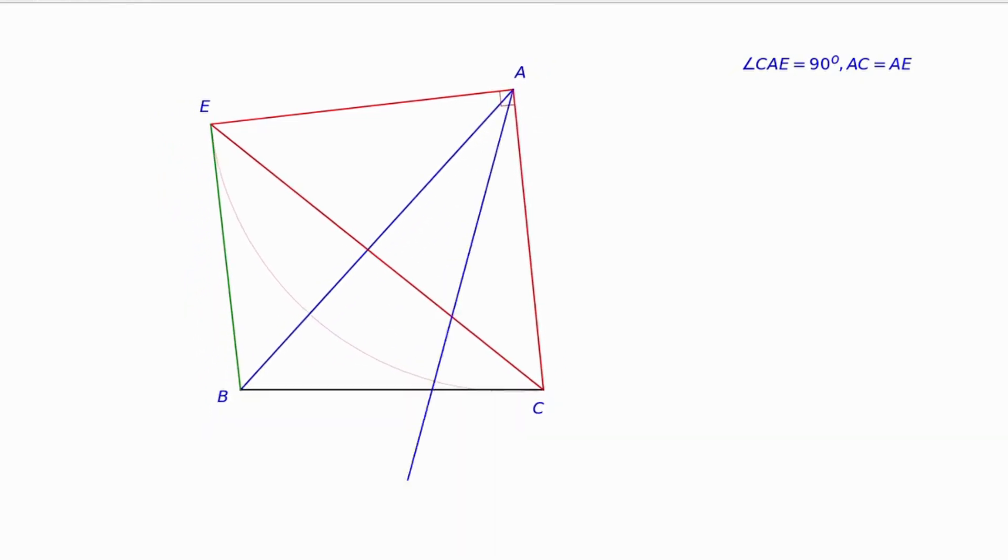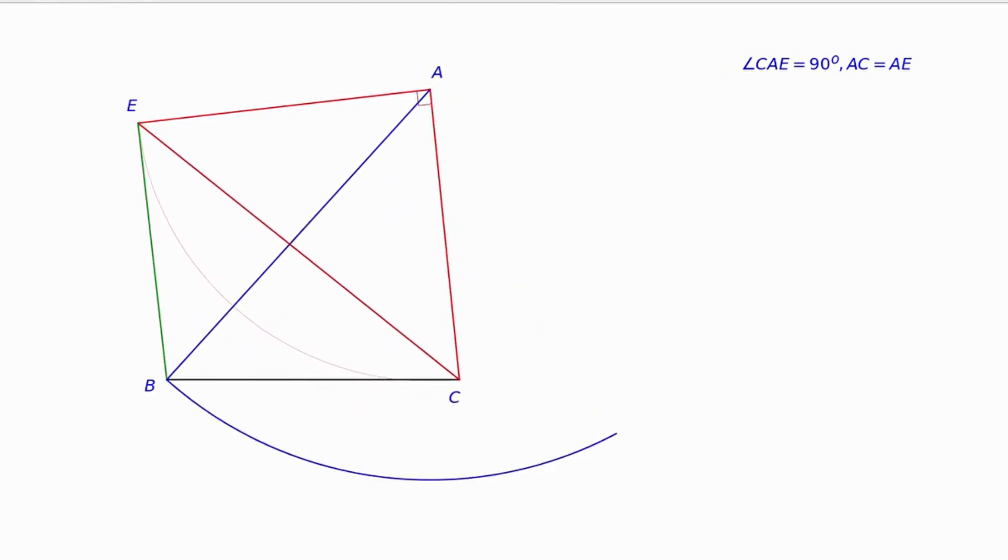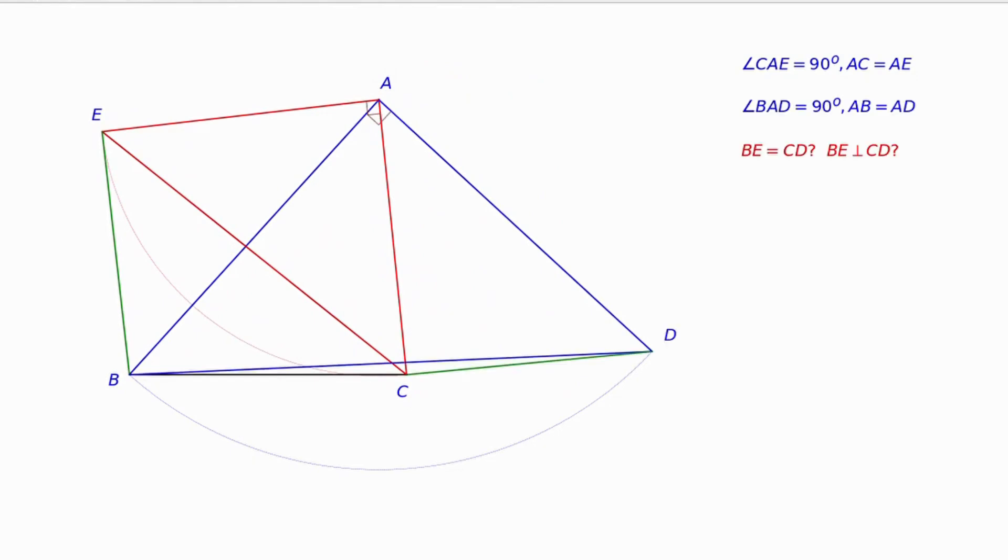Similarly, we construct an isosceles right triangle ABD at A. Prove that line segments BE and CD are equal and lines BE, CD are perpendicular.